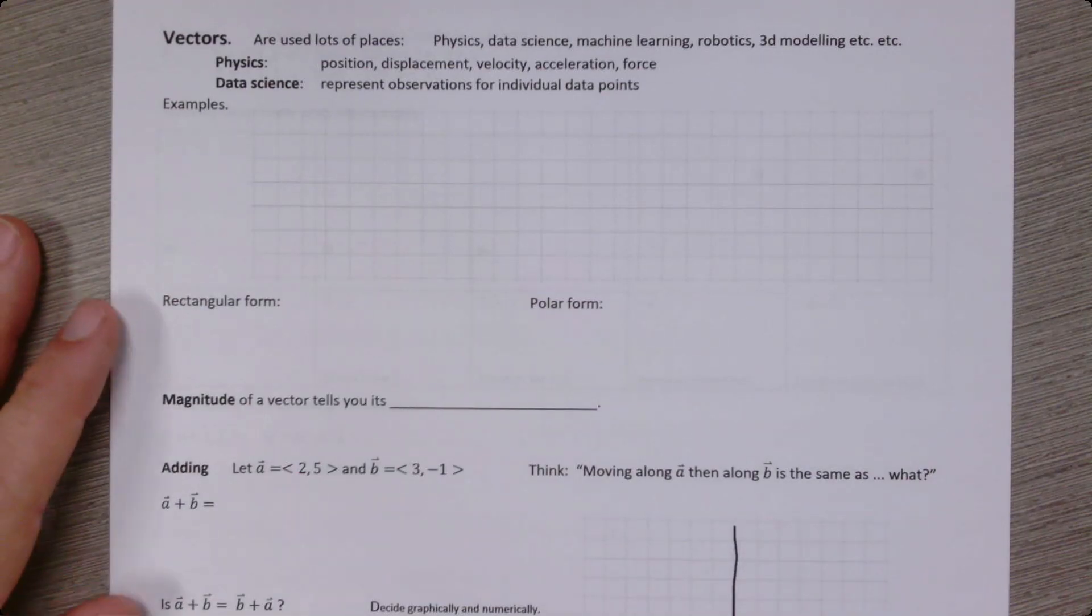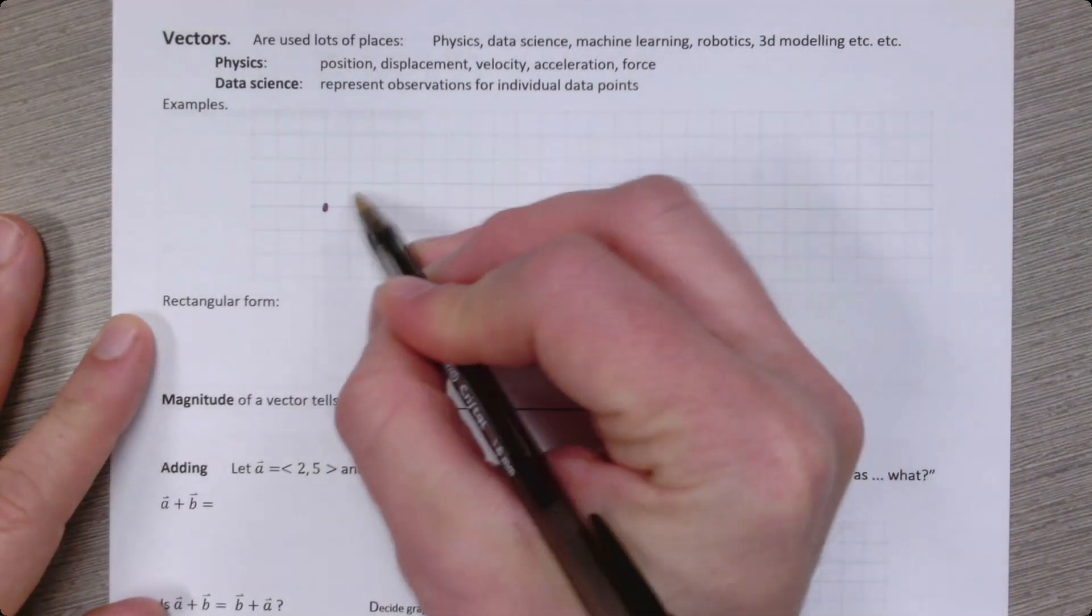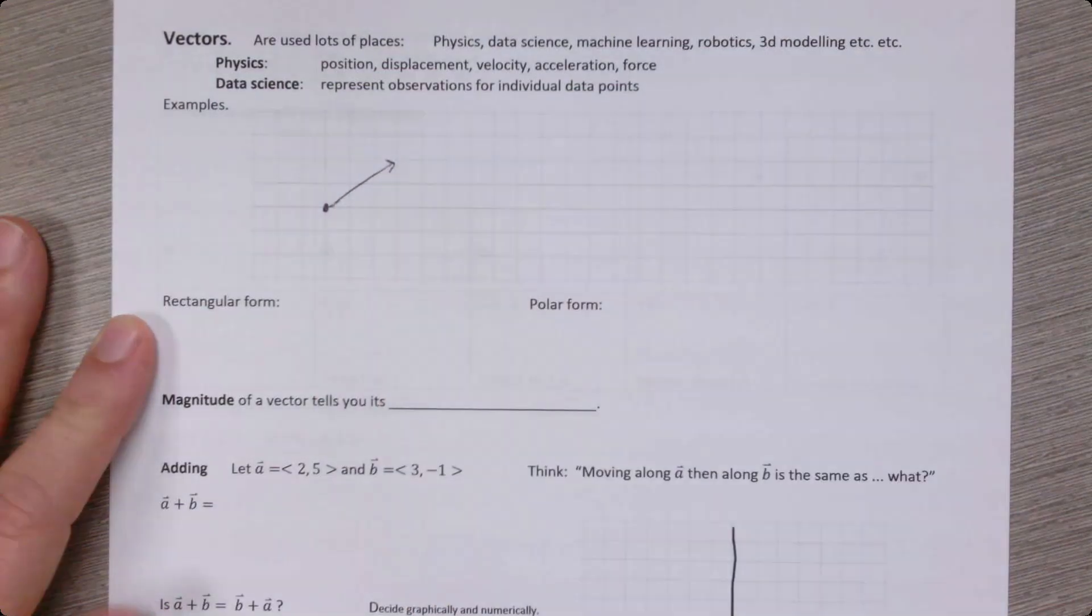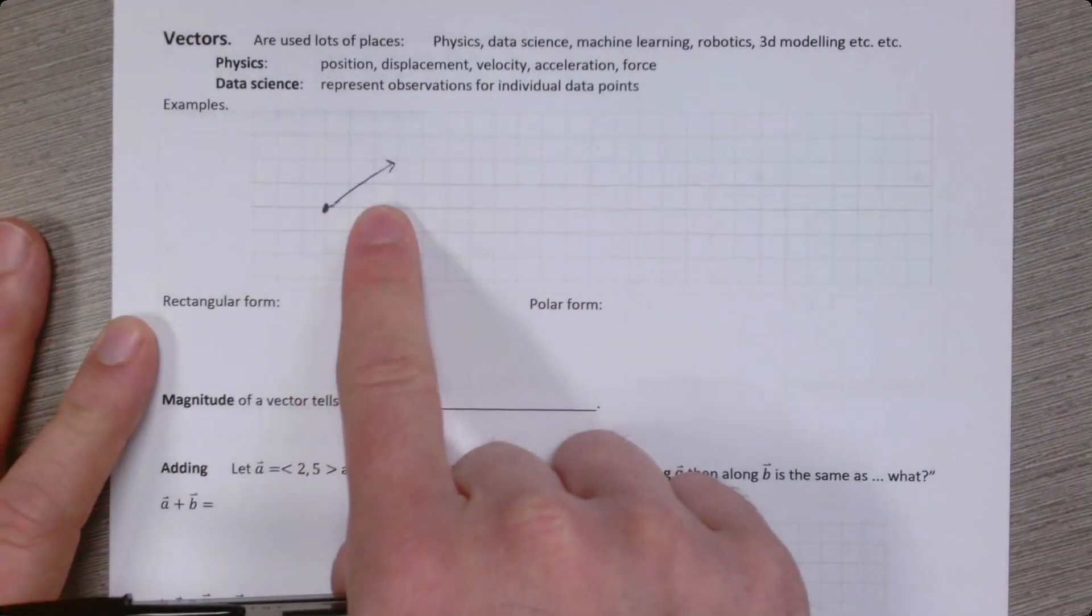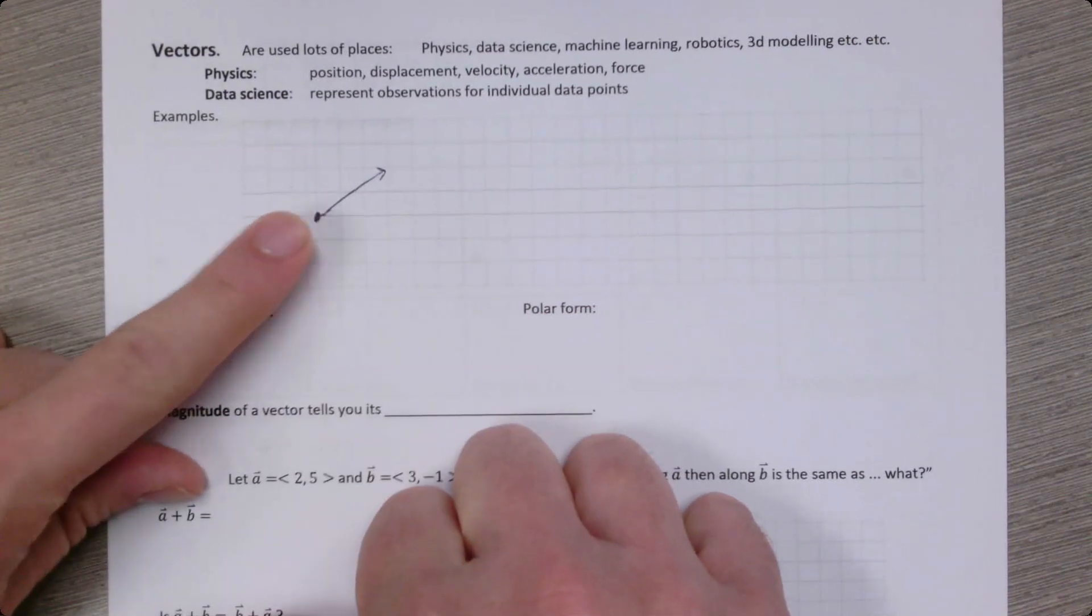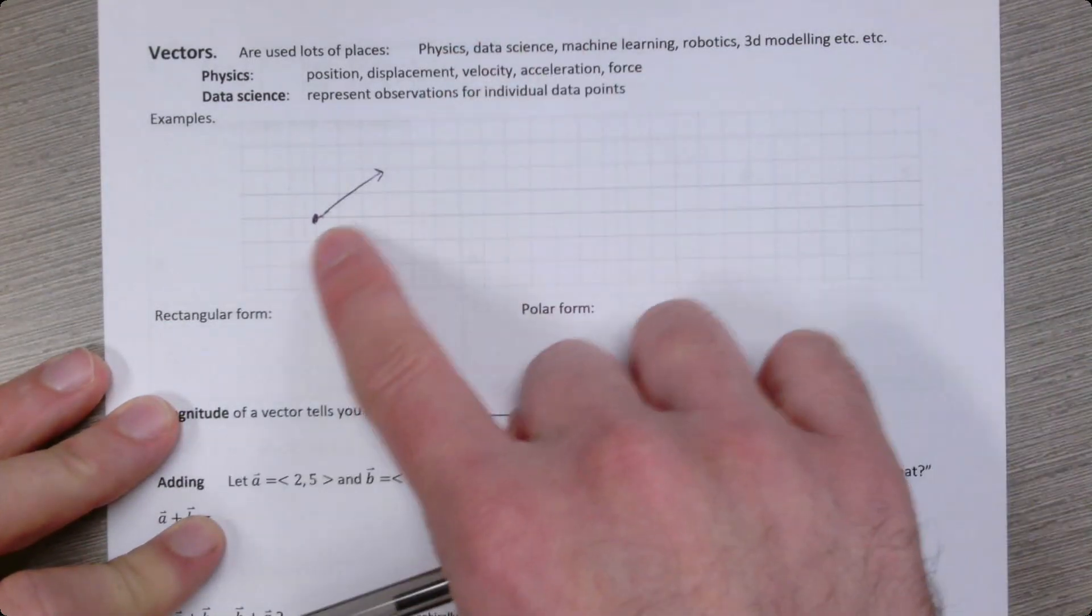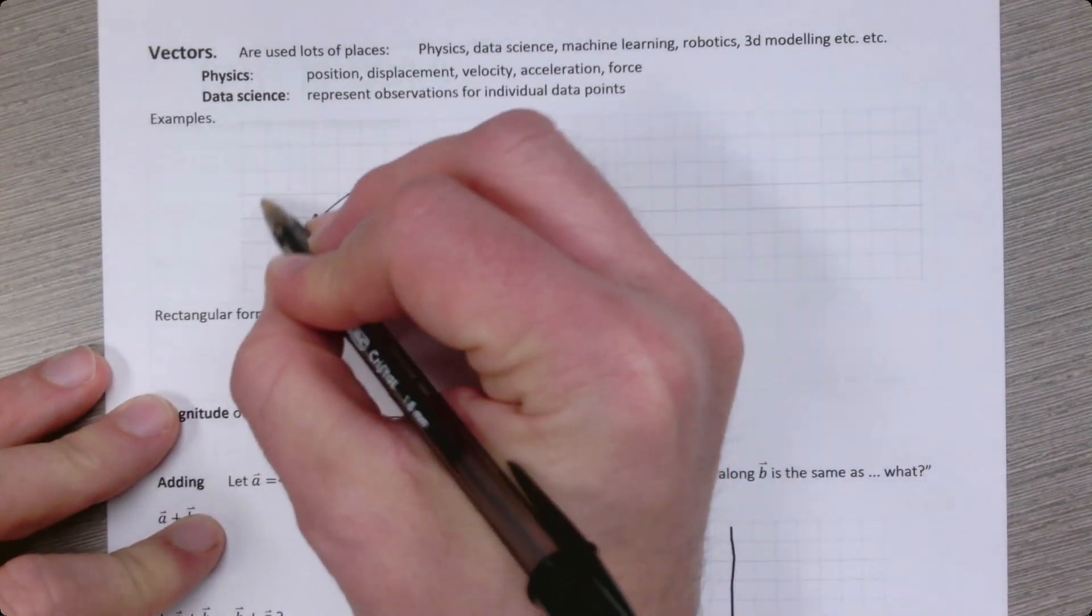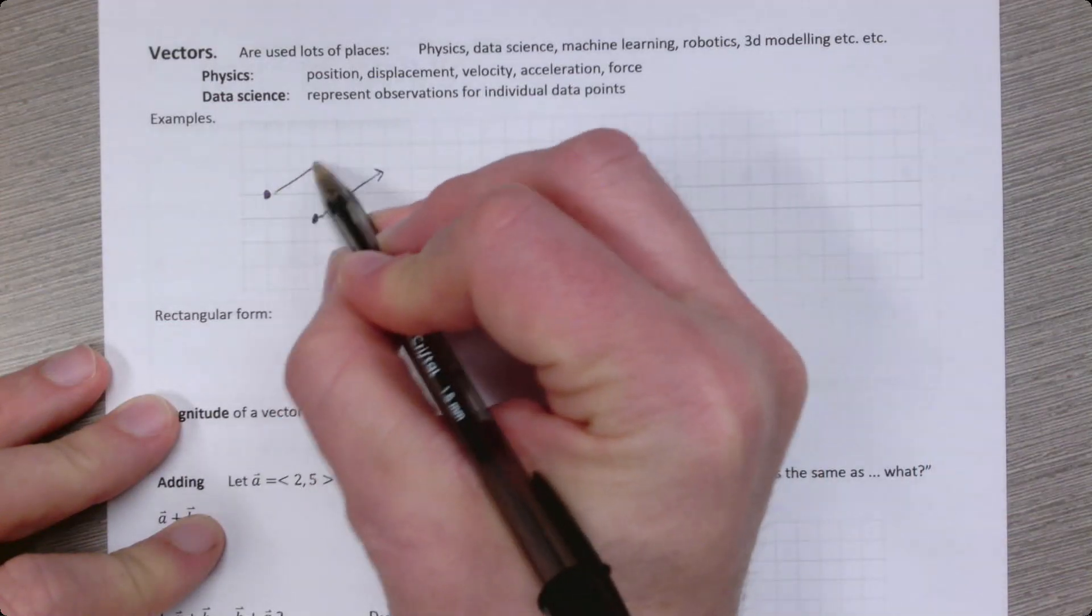So a great way to think about vectors is they are arrows in space, and the arrow has a direction and a length. So what can you use this to think about? It could be that this is an object, and the vector represents a force acting on the object. So it could be something pushing the object in that direction, or it could be a large gravitational source over here, so it's pulling the object in that direction. A thing to notice is that you could have two different objects and have the same force applied to both objects.